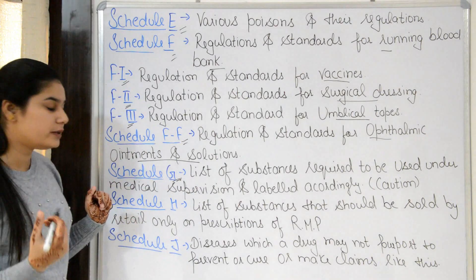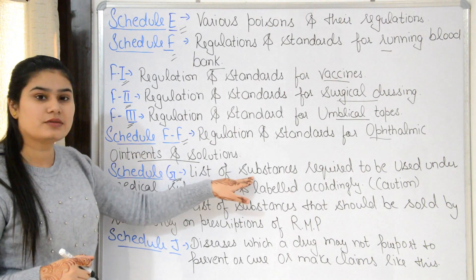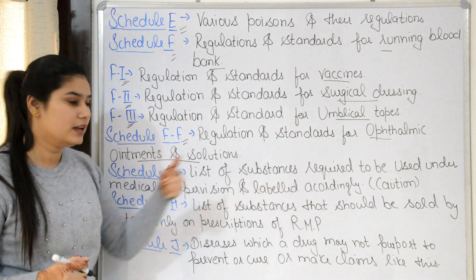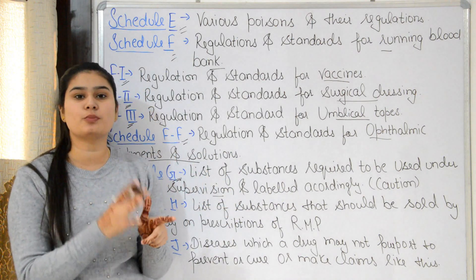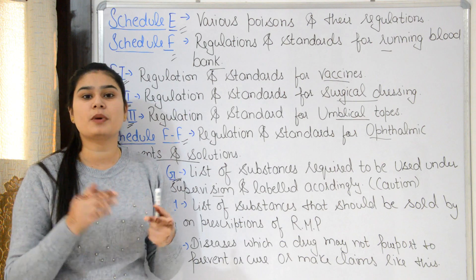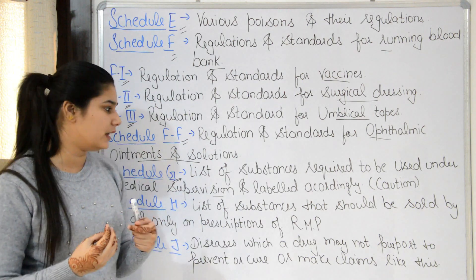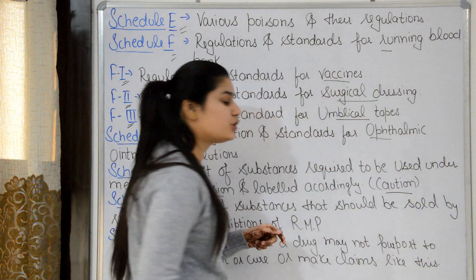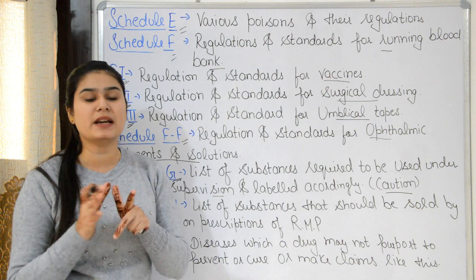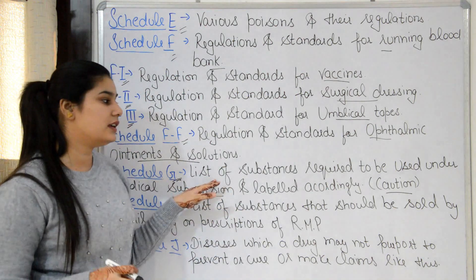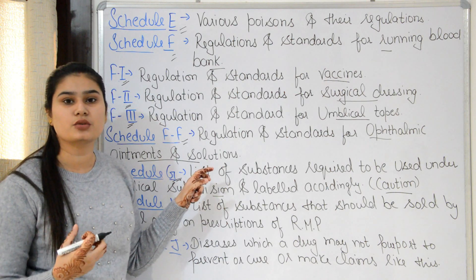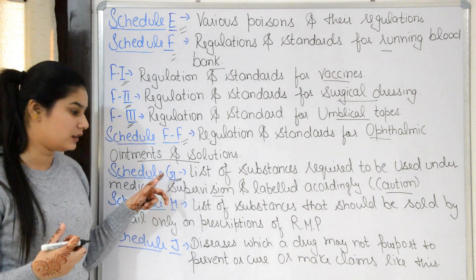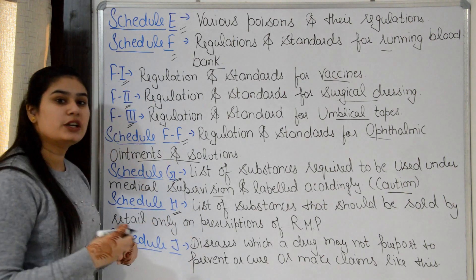Schedule G lists substances required to be used under medical supervision and labelled accordingly. These substances and drugs can only be taken under a doctor's supervision. The label used is a caution label stating these drugs can only be taken under medical supervision. Examples include anti-cancer drugs, psychotic drugs, and insulin.